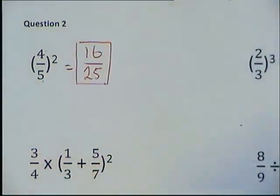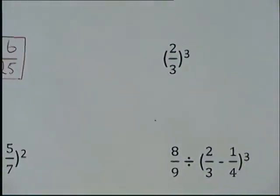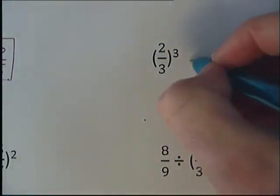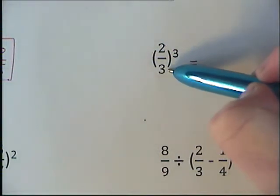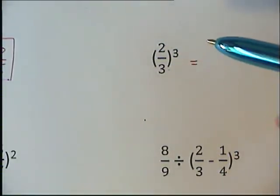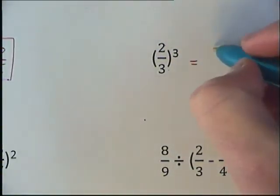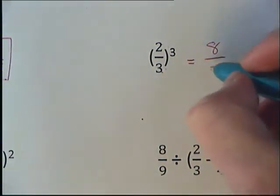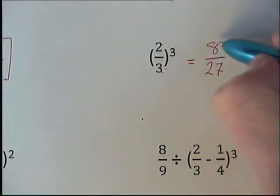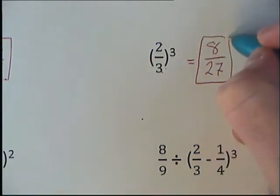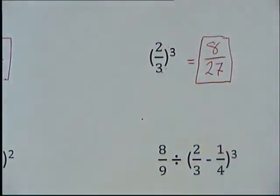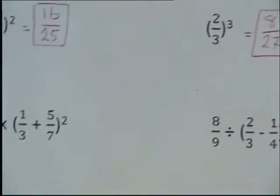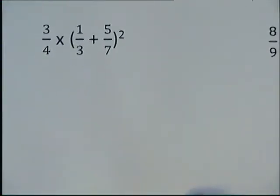The second question is very similar, but this time we're going to cube the top number and cube the bottom number. 2 cubed, so 2 times 2 times 2 is 8, and 3 cubed, 3 times 3 times 3 is 27. Again can't be simplified down, so that's just our answer.